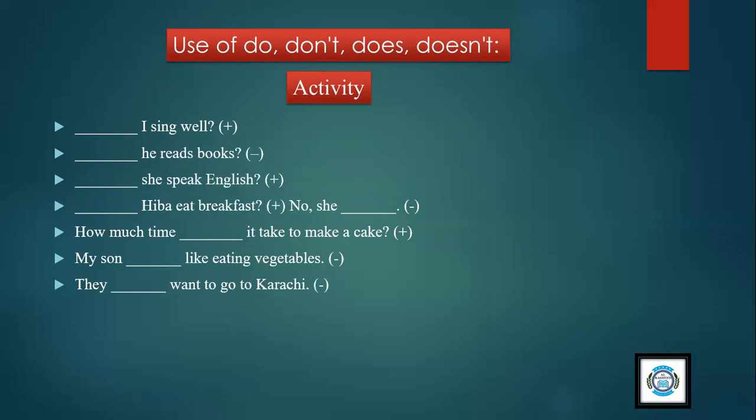The dash want to go to Karachi. Negative sentence. Because it is plural, so we are going to use do. They don't want to go to Karachi.